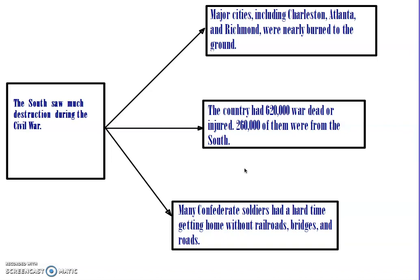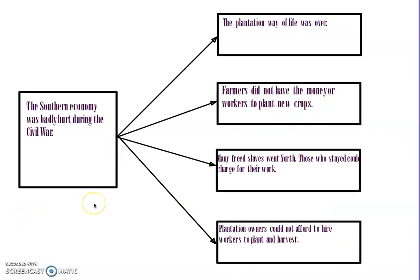A lot of the North's higher casualty numbers were because the Union had a bigger population to begin with. So even though the Union lost more soldiers, they had a larger population to start with. The Southern economy was badly hurt during the Civil War because their plantation way of life was over. Farmers did not have the money or workers to plant new crops. Many freed slaves went to the North, and those who stayed could now charge for their work. Plantation owners could not afford to hire workers to plant and harvest new crops.